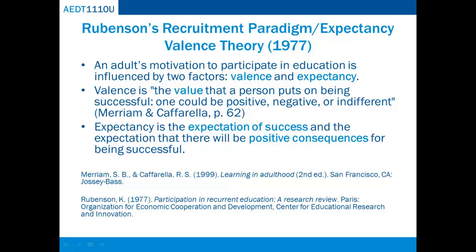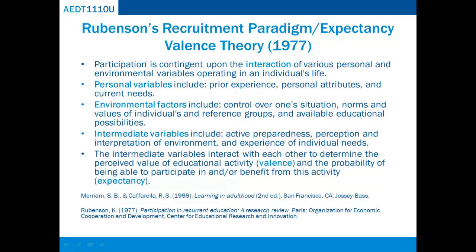Rubenson argued that if education and training is not considered as having valence, or the person involved does not expect that participation will lead to a desired outcome, he or she will not be interested in participating in adult education and training. According to Rubenson, participation is contingent upon the interaction of various personal and environmental variables operating in an individual's life. Personal variables include prior experience, personal attributes, and current needs. Environmental factors include control over one's situation, norms and values of the individuals and reference groups, and available educational possibilities.